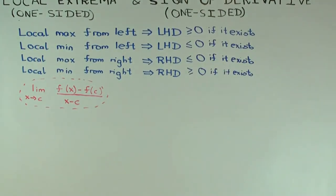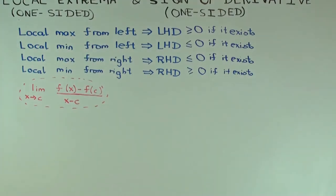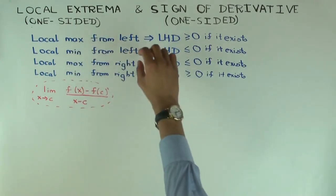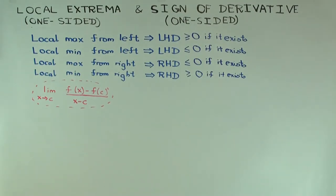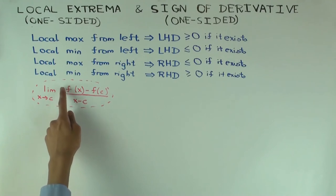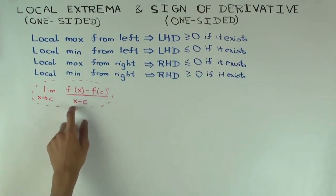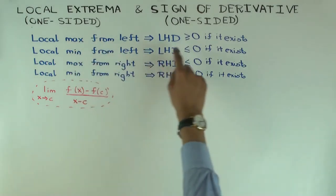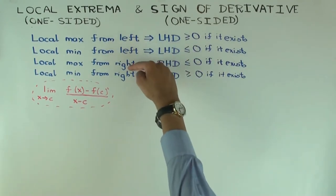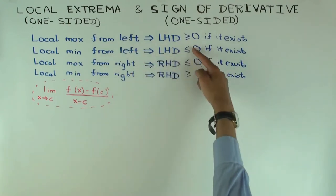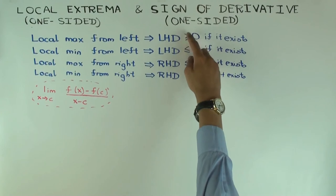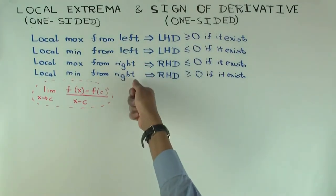Two interacting things determine the sign: whether it's a maximum or minimum, and whether it's left or right. To determine the sign, you look at the numerator and denominator. The max/min controls the sign of the numerator f(x) − f(c), while left/right controls the sign of the denominator x − c. Together, those signs determine the sign of the quotient and, if the limit exists, the sign of the derivative. So changing from left to right while keeping it max changes the conclusion from ≥ 0 to ≤ 0, and similarly for min. Keeping it fixed at left and changing from max to min also changes the conclusion.